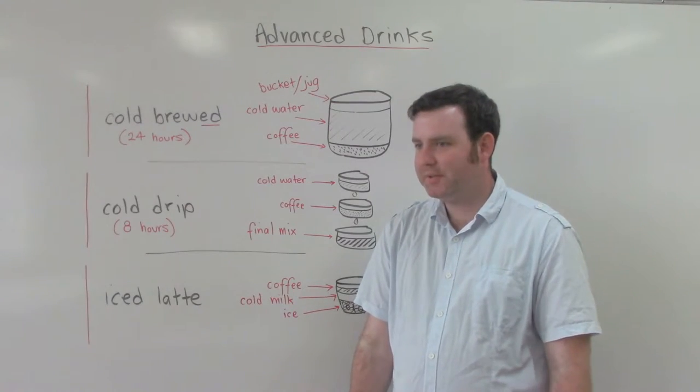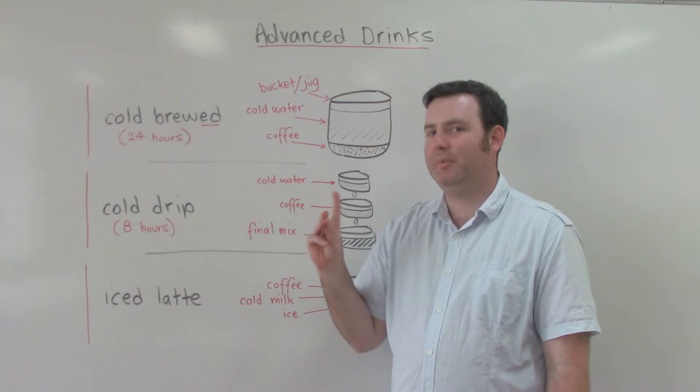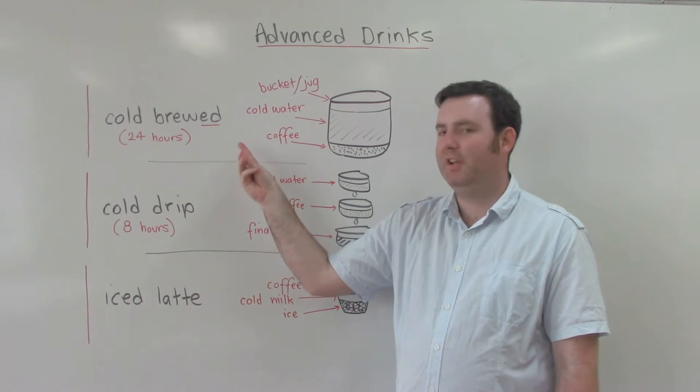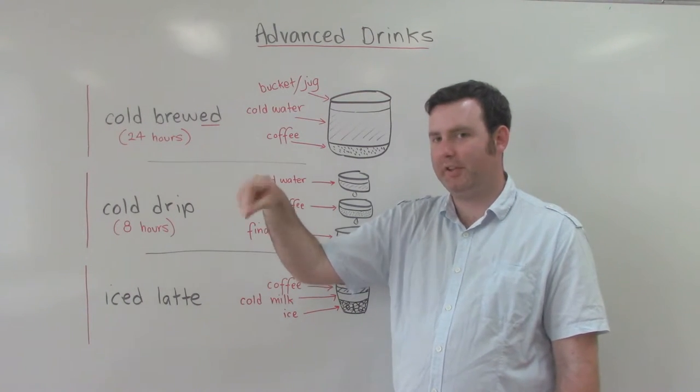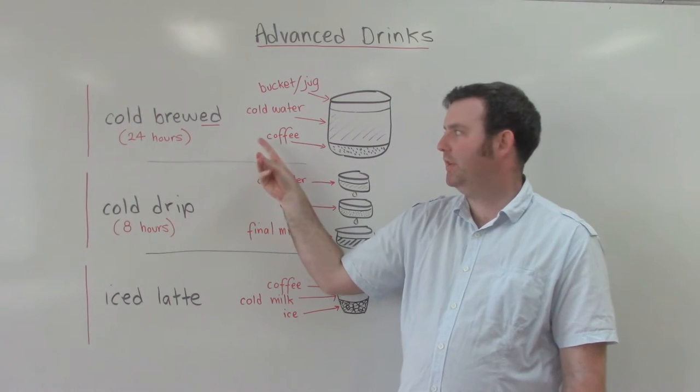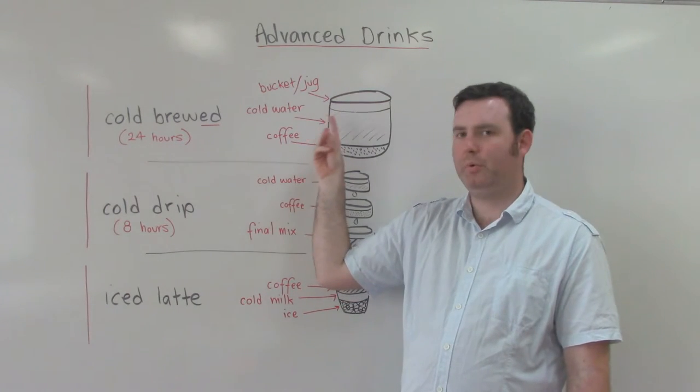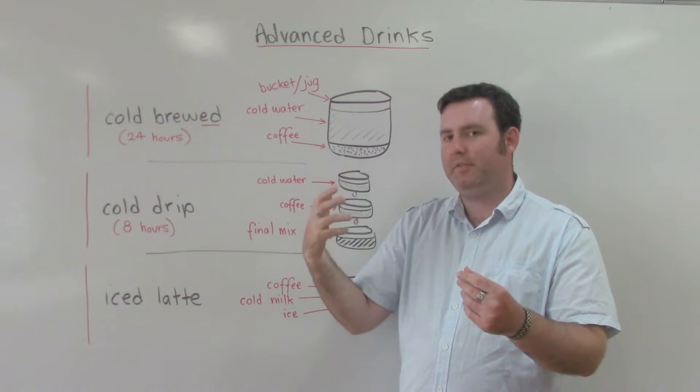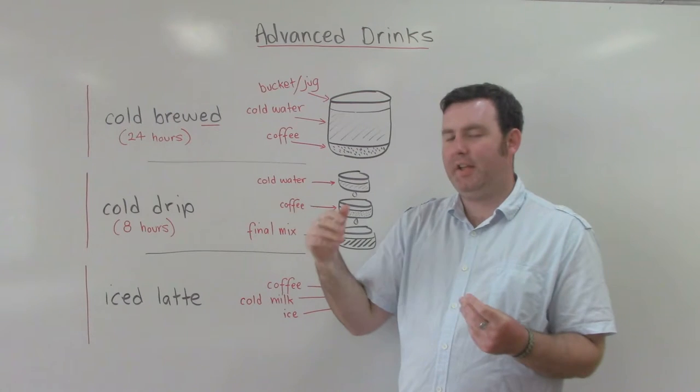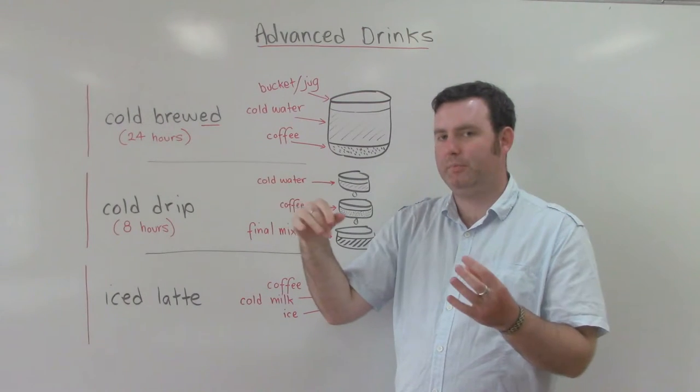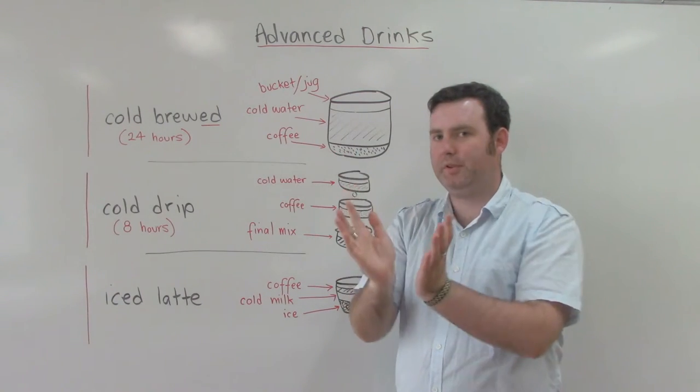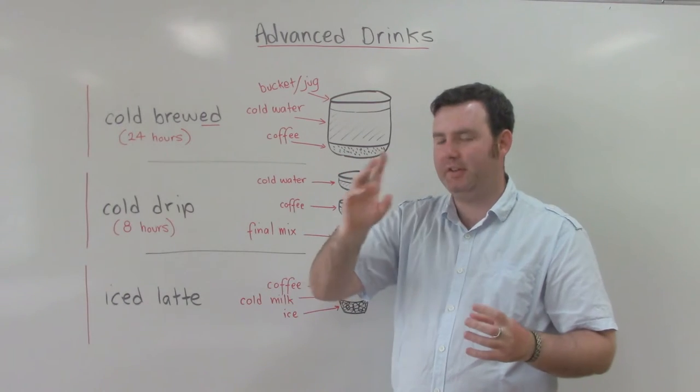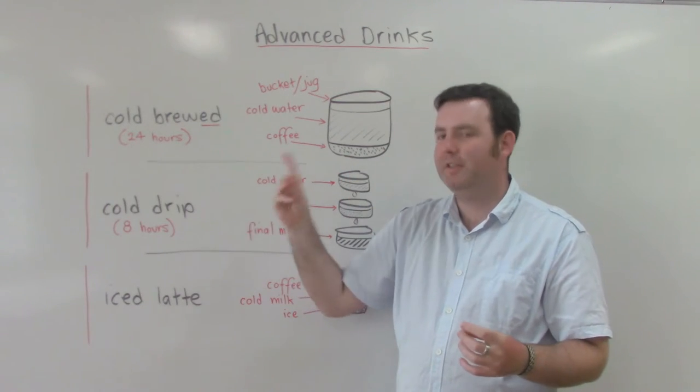What? 24 hours? I know why. Because it's cold brewed. Not cold brewed like in the last clip. Cold brewed is where we put coffee and cold water in a big bucket or a big jug. It mixes together for 24 hours. At the end, when we're ready to drink, we put it through a filter and then we're ready to go.